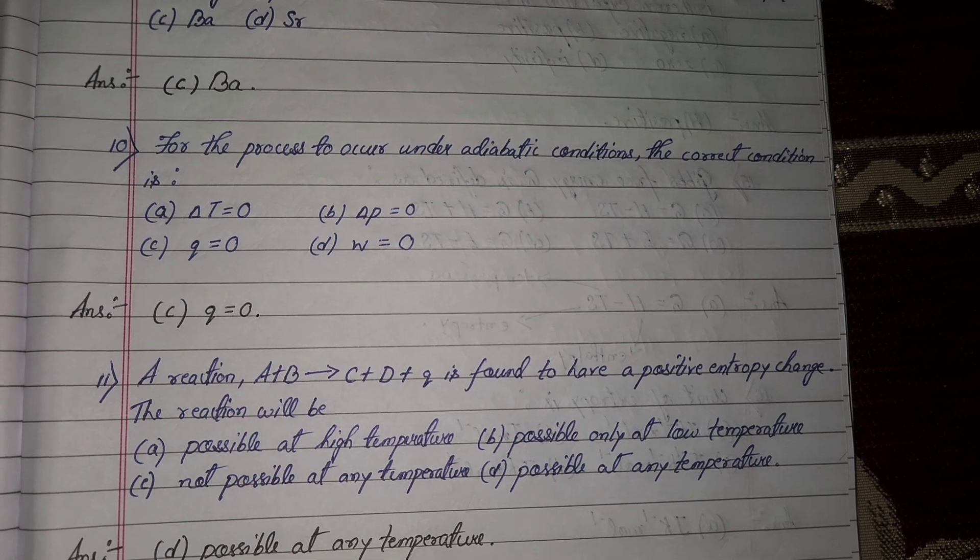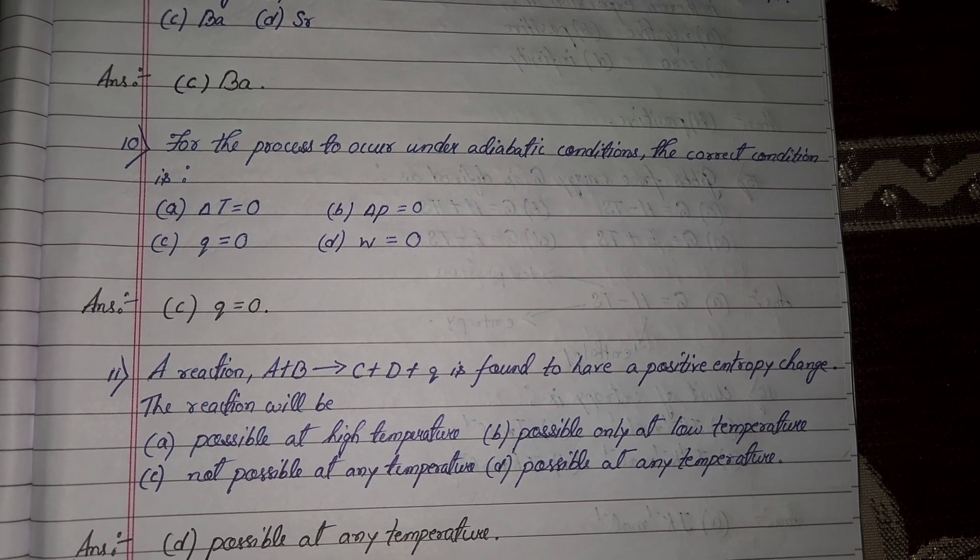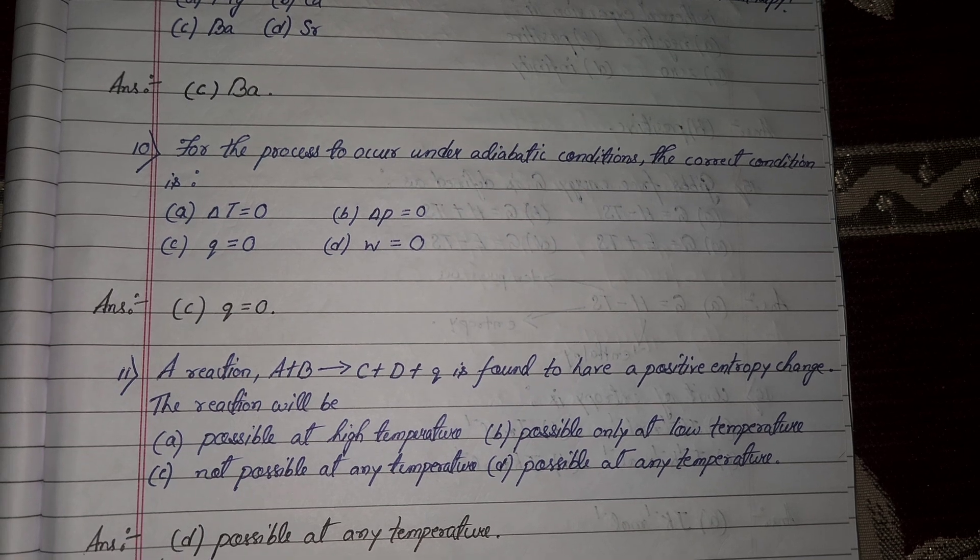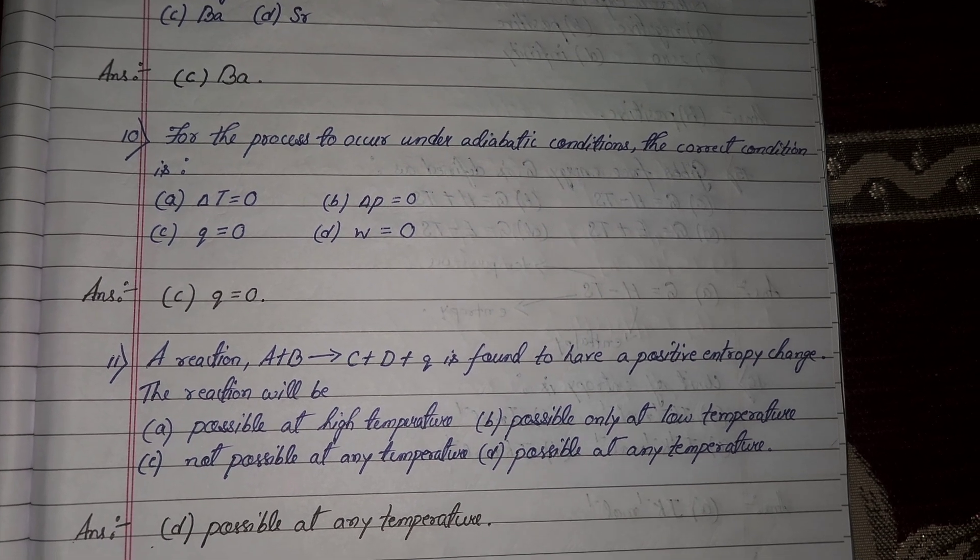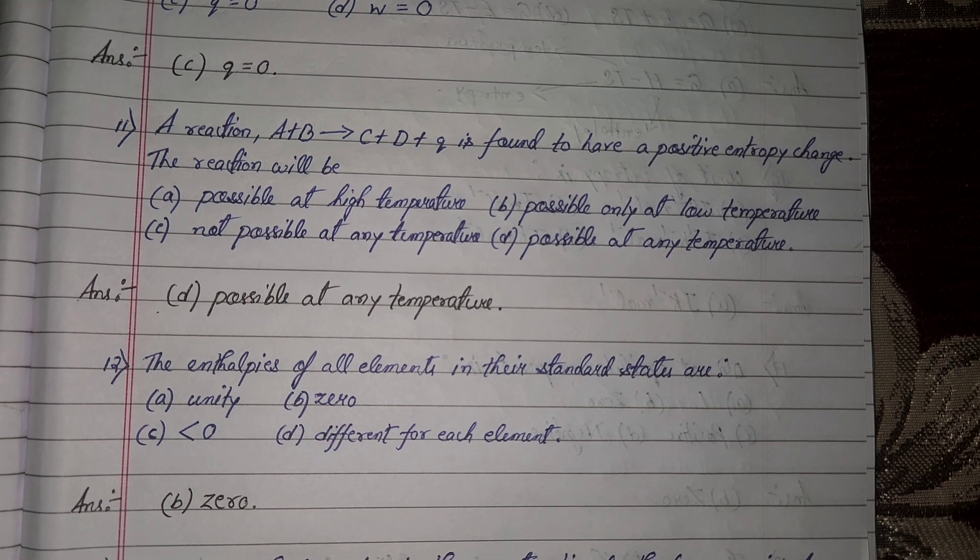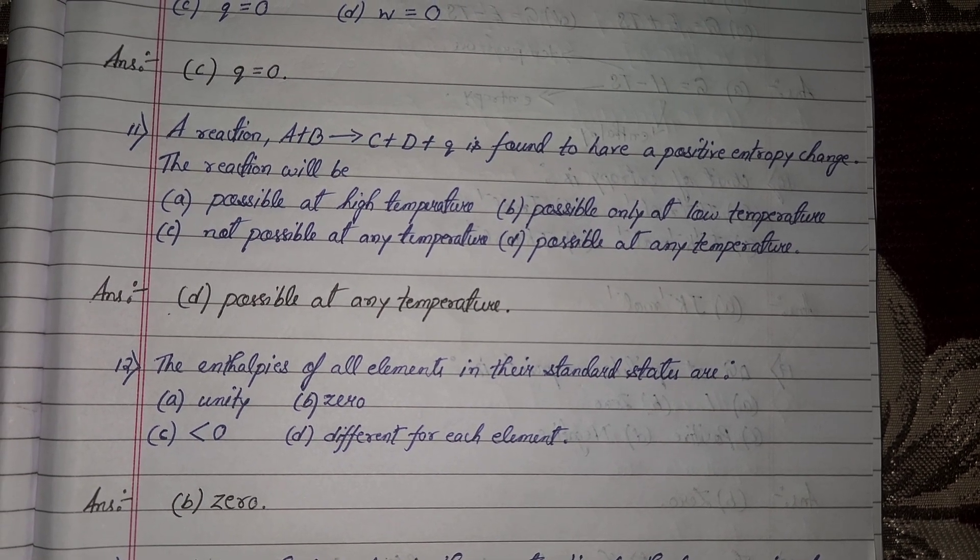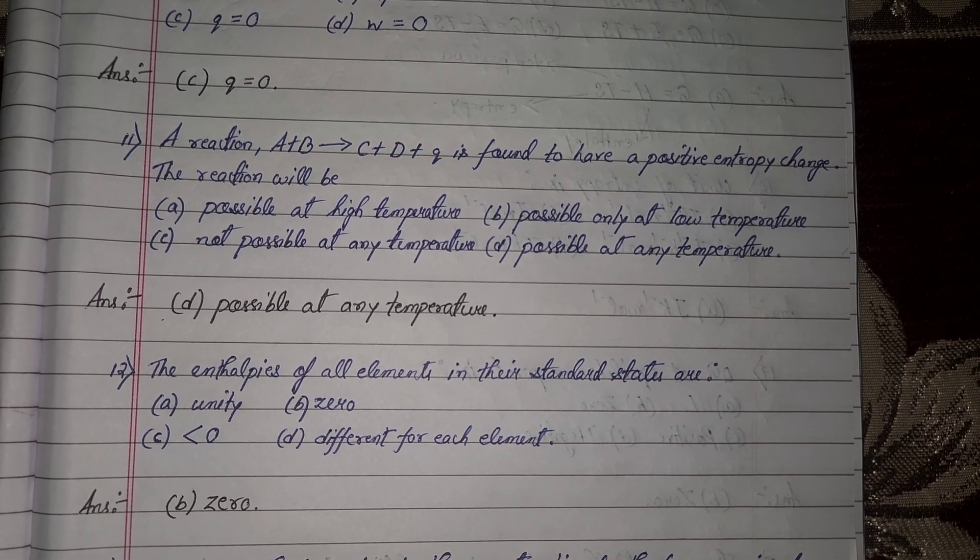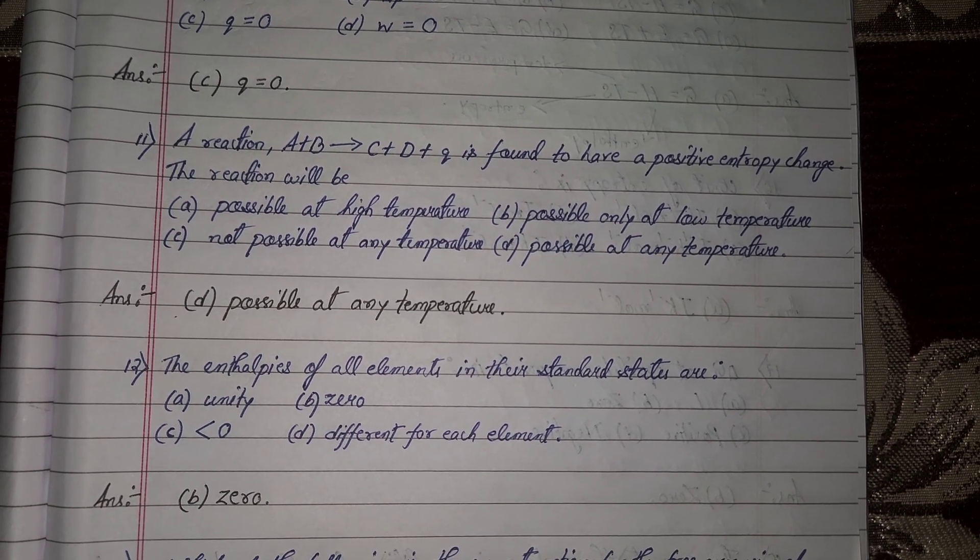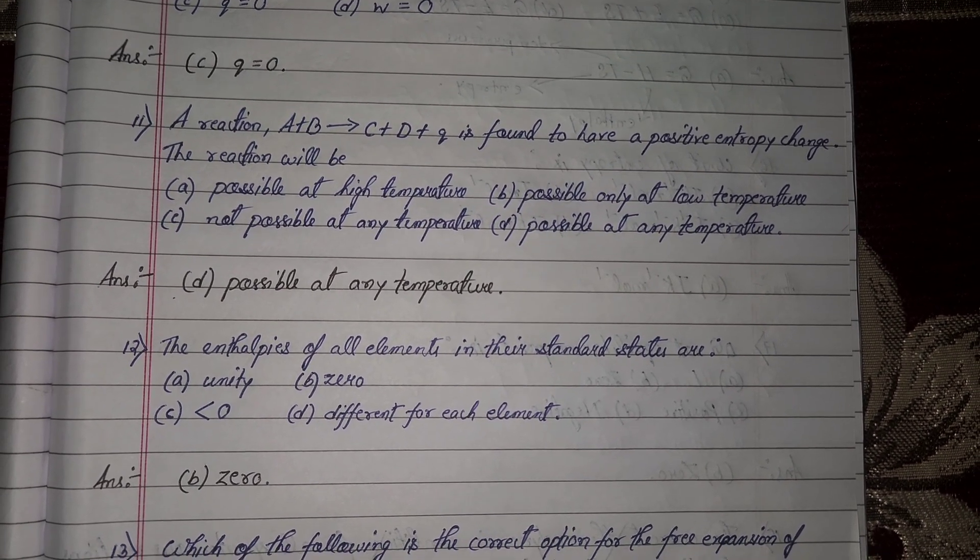Next question number 10, for the process to occur under adiabatic conditions, the correct condition is option number C, Q is equal to 0. Next question 11, a reaction A plus B tends to C plus D plus Q is found to have a positive entropy change. The reaction will be possible at any temperature. Option number D will be your correct answer.